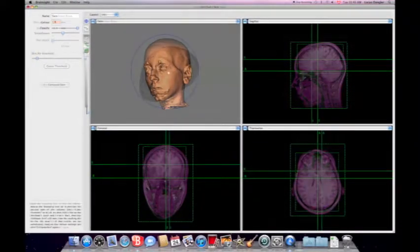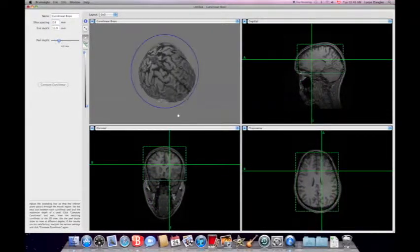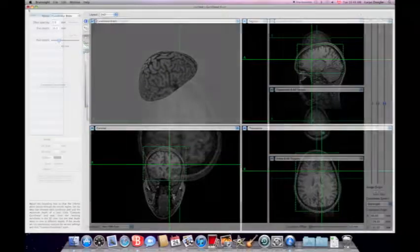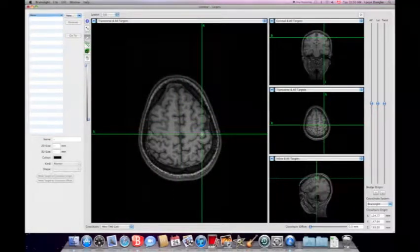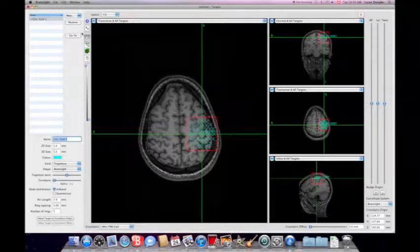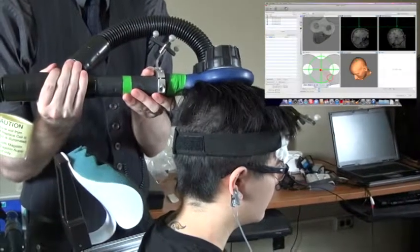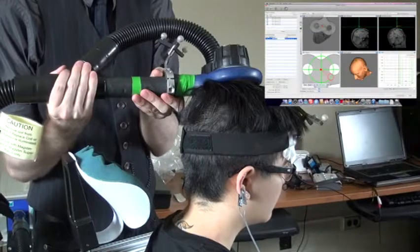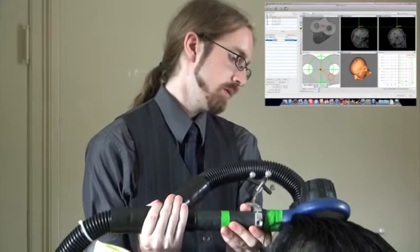TMS requires a detailed rendering of each participant's brain in order to accurately target stimulation to a specific brain area. We obtain an accurate picture by acquiring an anatomical MRI scan of each participant prior to the TMS procedure. The specialized software, such as Brainsight, is used to transform the MRI scan into a 3D representation of a participant's brain.